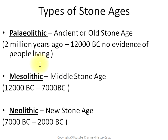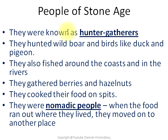People of the Stone Age were known as hunter-gatherers. They hunted wild boar and birds like duck and pigeon. They also fished around the coast and in the rivers, and gathered berries and hazelnuts. They cooked their food on spits. These were nomadic people — people who move from one place to another in search of food.